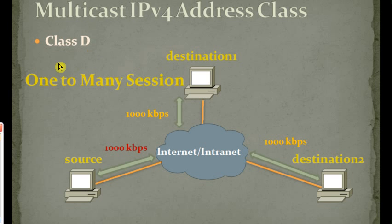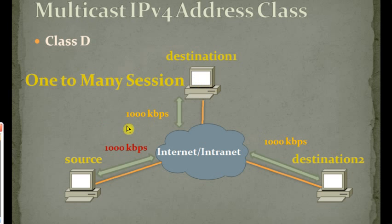Multicast IPv4 address class is defined in Class D. Class D is a one-to-many session model, where a source machine delivers traffic to destination 1 and destination 2. The destination IP address used should be a multicast IP address belonging to Class D. Destination 1 and destination 2 will receive the packets because they are members of the multicast group. If the traffic requires 1000 kbps, it is not replicated — only one traffic session needs to be generated by the source, and whoever is a member of the multicast group will receive the packets.